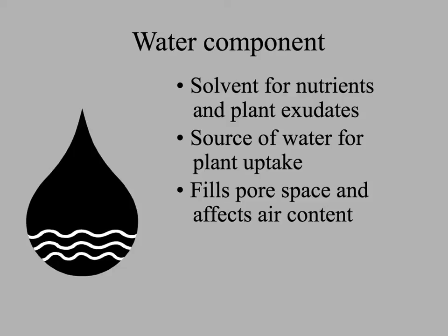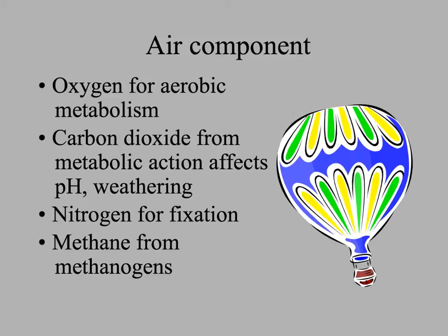The water component of soil is very important for carrying nutrients into plants. And once into plants, it hydrates the cells and allows things to move within the plant. Water in the soil fills the spaces between the particles, and it also affects the air content — a very saturated soil can't have very much air in it. For plants, it's very important to have some air in the soil because they need oxygen for their aerobic metabolism. The cells of the roots, as well as the above-ground parts of the plant, need air surrounding them. Carbon dioxide from respiration affects the pH of the soil as well as the weathering of the rocks.